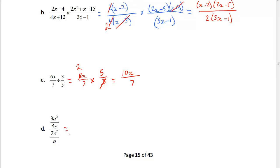Division can also be written the way we see it in part D, so we're going to rewrite this as 3a squared over 5c multiplied by the reciprocal, which is a over 2c squared. We actually don't have anything on top and bottom that can cancel here, so we multiply and get 3a cubed over 10c cubed — nothing to reduce, nothing to cancel.